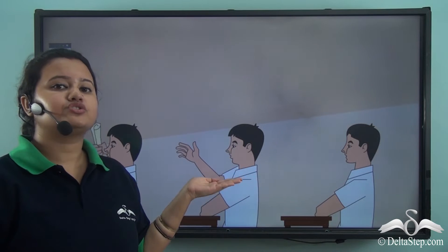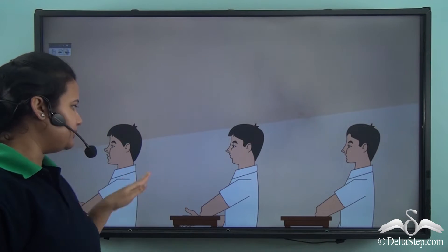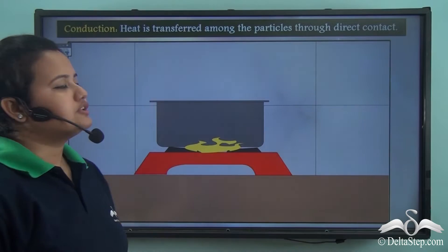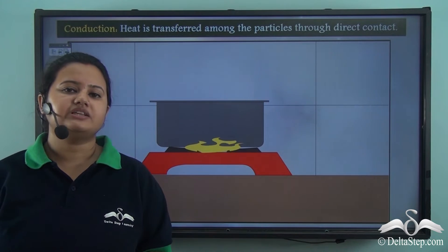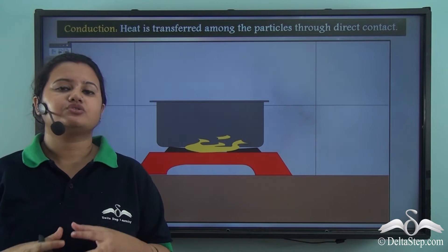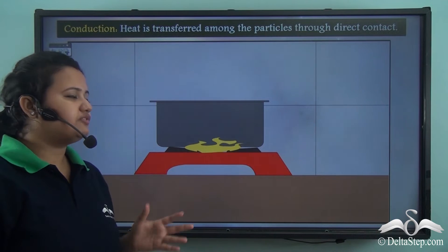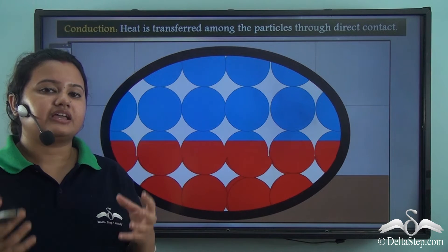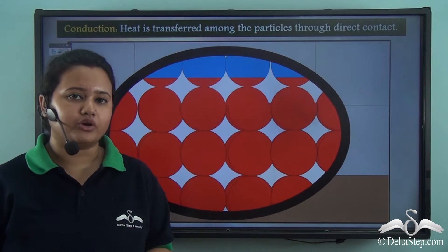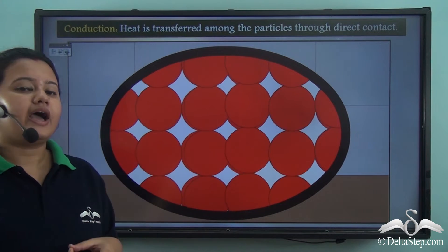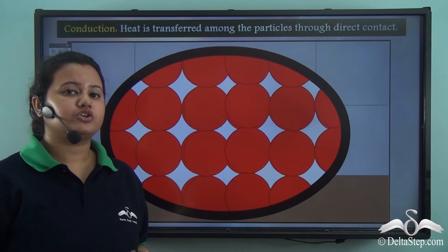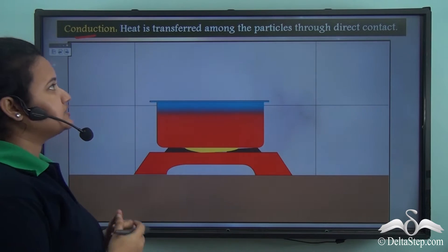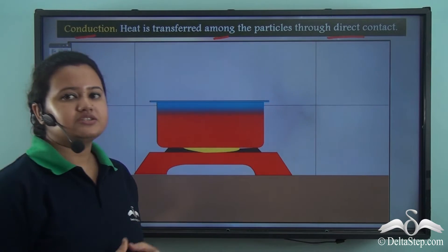You will simply pass the paper to the student sitting in front of you and ask him or her to pass it forward until the paper reaches the student on the first bench. Similarly, heat transfers among molecules through direct contact — not by the actual movement of molecules but by their vibration. In this video we can see the bottom of a vessel receiving direct heat from a stove, and heat is transferred from one molecule to the other. This process of heat transfer is called conduction. Conduction is the process in which heat is transferred among particles through direct contact, and it usually takes place in solids.